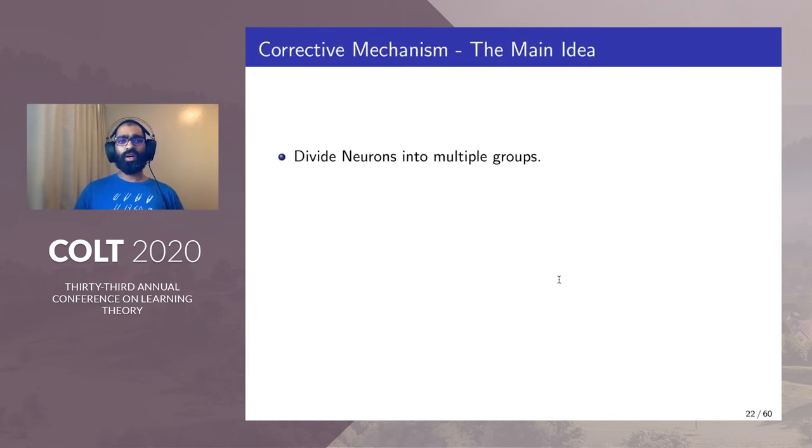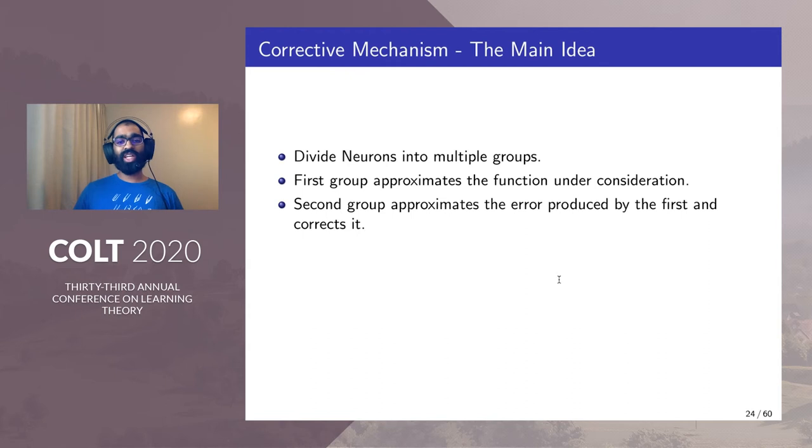The main idea behind all our results is called the corrective mechanism. Here we divide the number of available neurons into multiple groups. The first group approximates the function under consideration. The second group approximates the error produced by the first and corrects it.